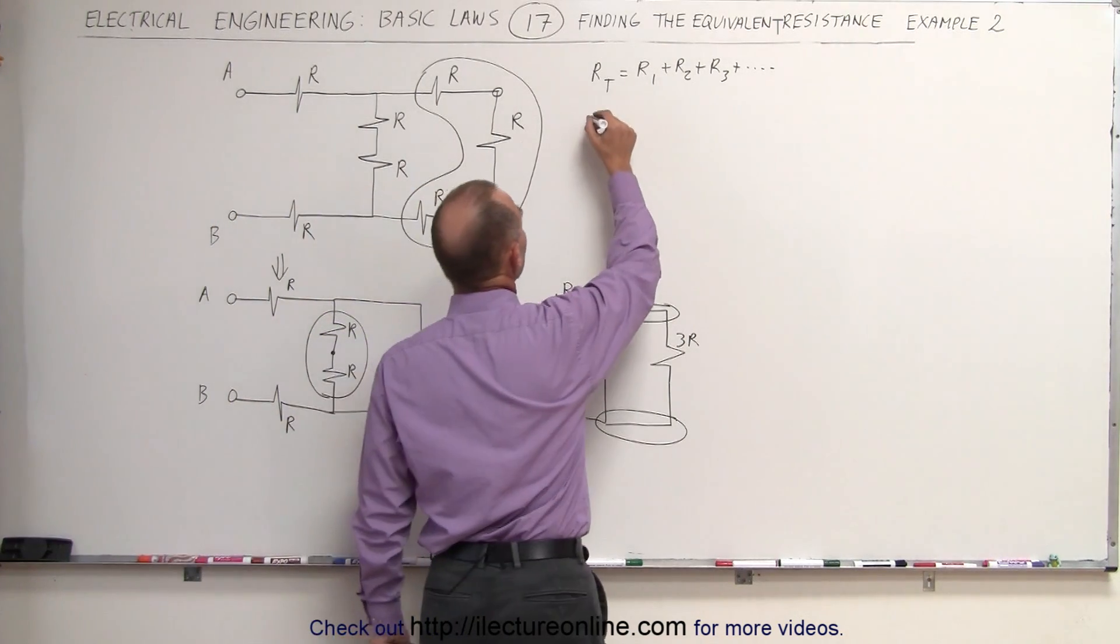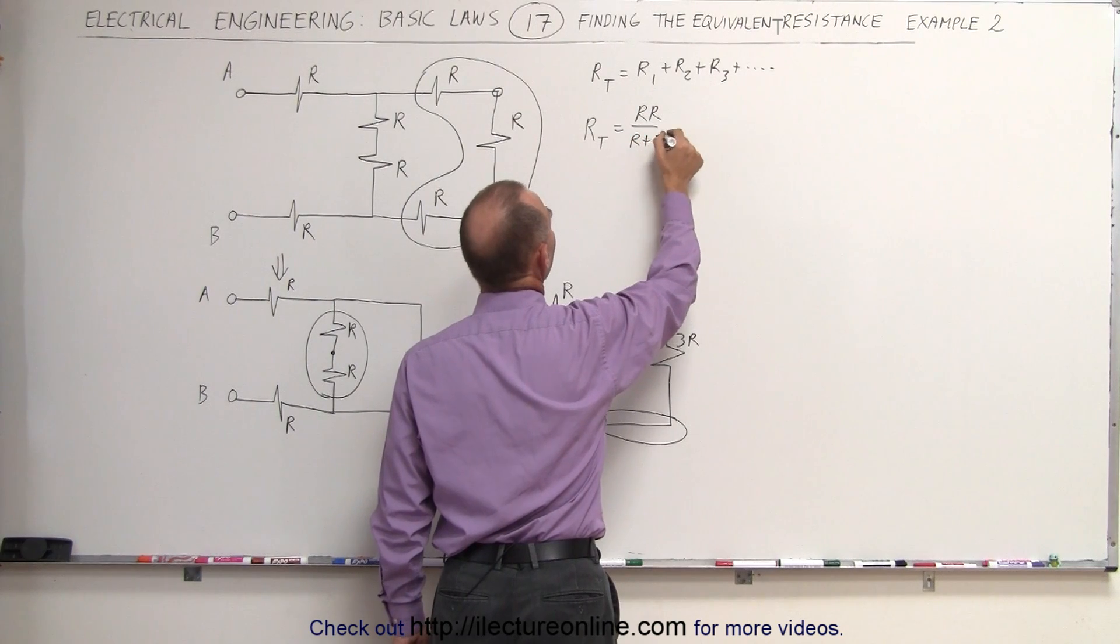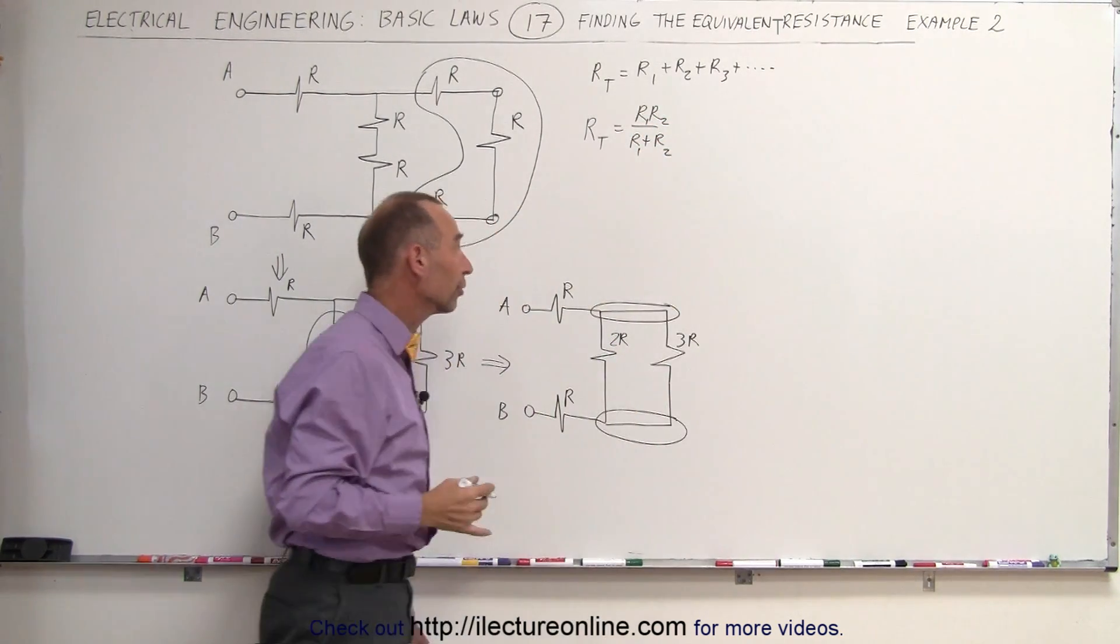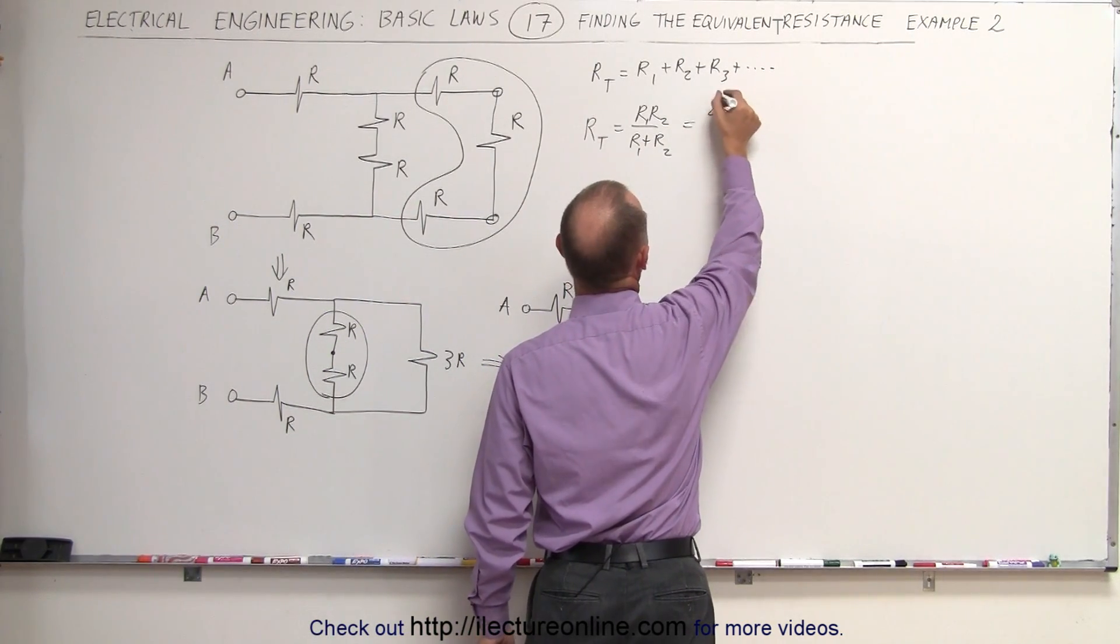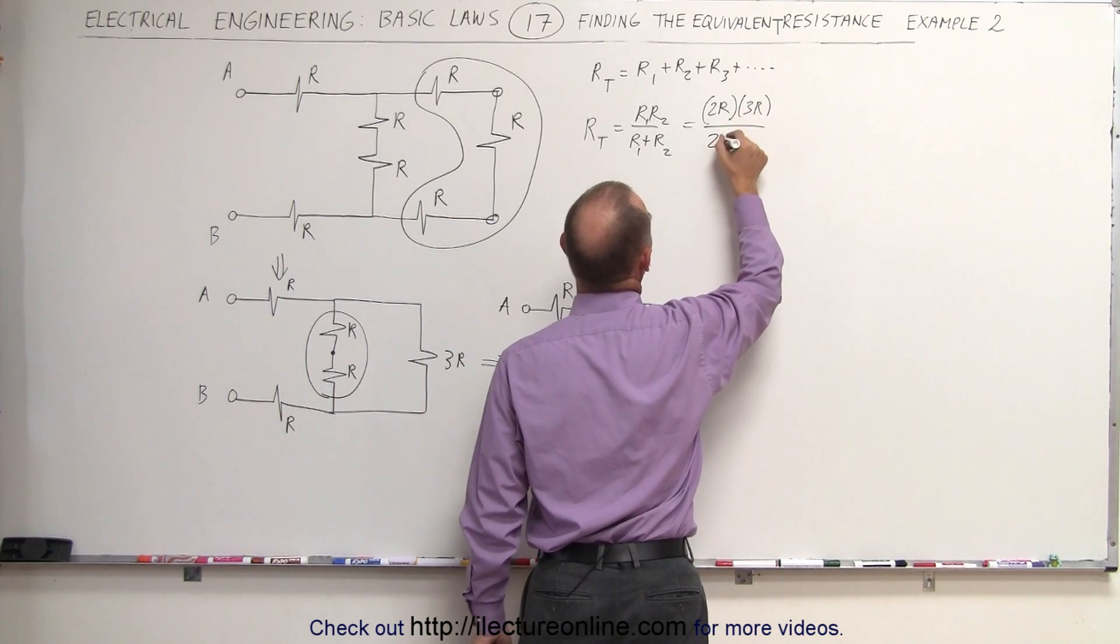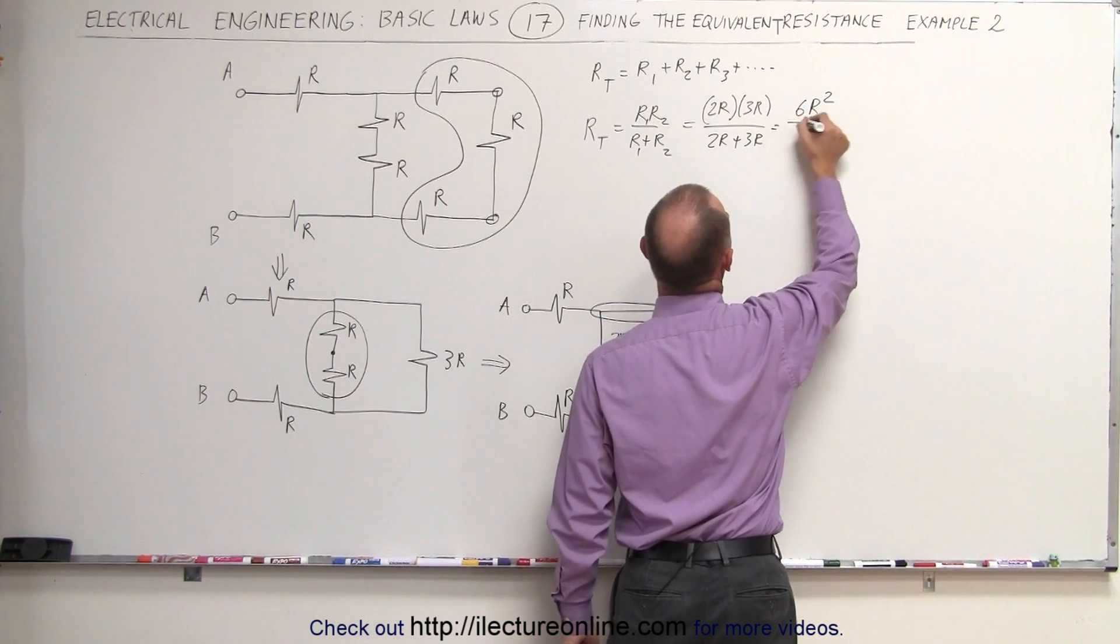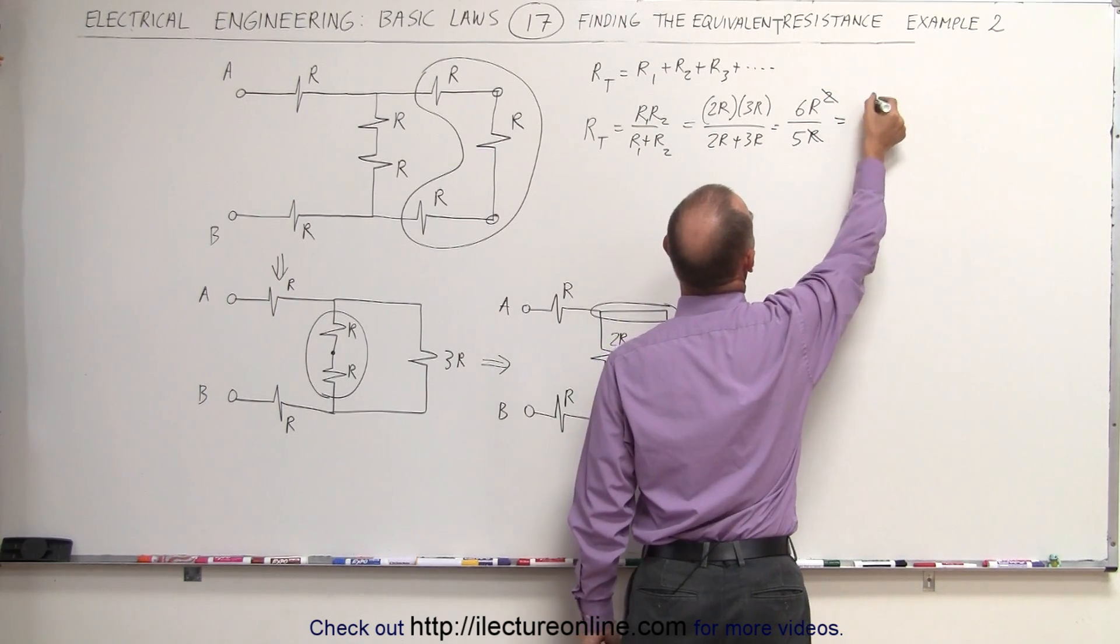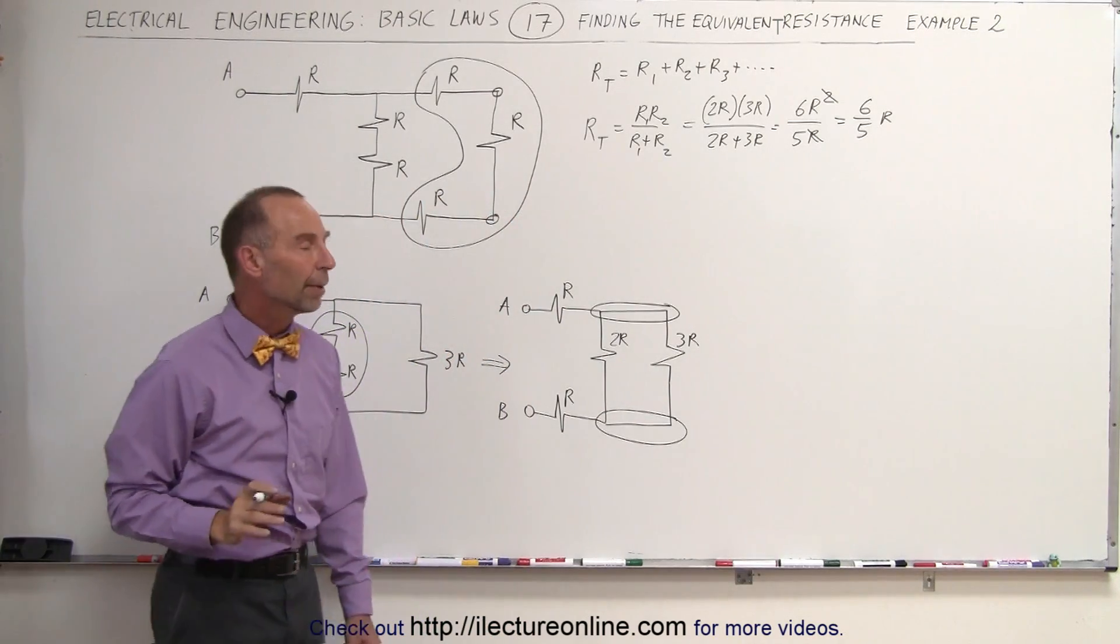And in parallel, we can say that R total equals the product over the sum: R1 times R2 divided by R1 plus R2, whatever R1 and R2 is. In this case, this is equal to 2R times 3R divided by 2R plus 3R, which is 6R squared divided by 5R. This cancels out this. This becomes 6 over 5R. That is the equivalent resistance of those two in parallel.